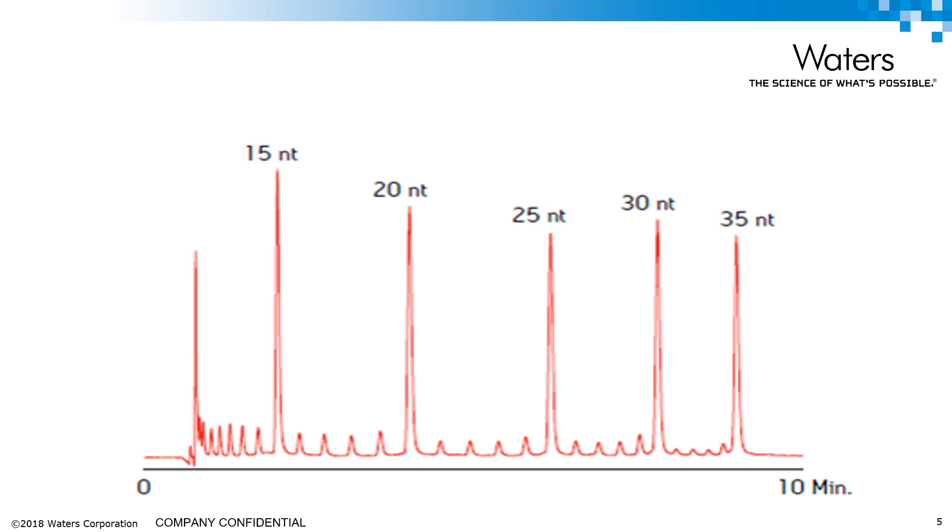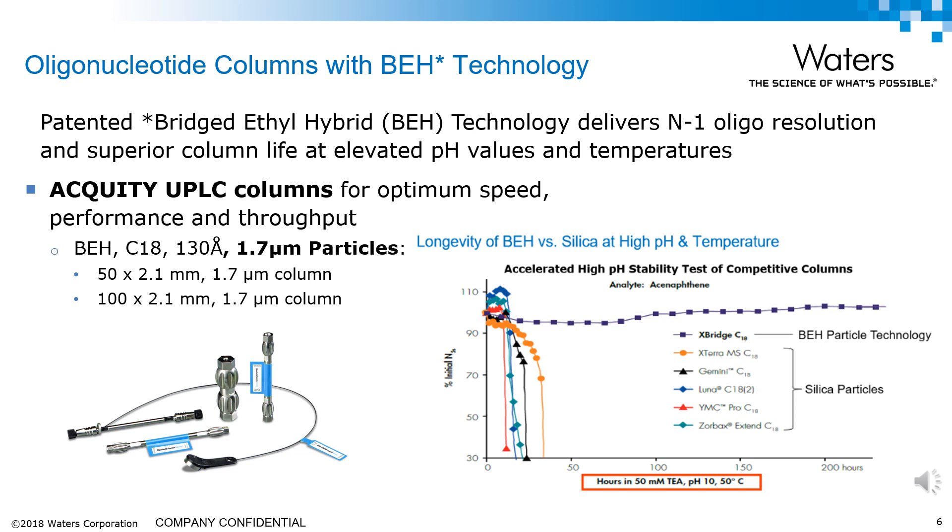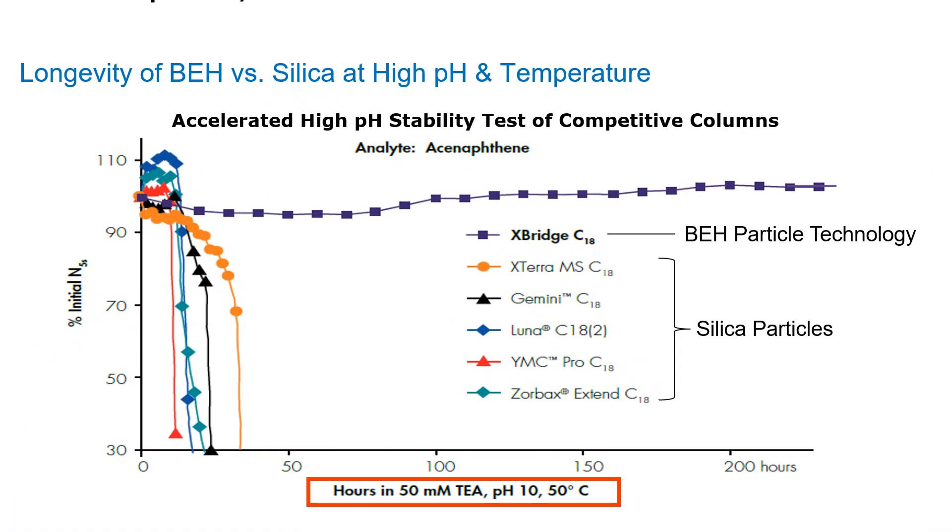Now getting a result like this actually requires the correct approach. We use bridged ethyl hydride C18, or BEH C18 columns, for this analysis because of their good separation and speed, being true sub-2 micron UPLC particles. But also probably more importantly because of their stability in the conditions used in this analysis, which is typically a high pH and high temperature, which many other column chemistries just simply can't handle.